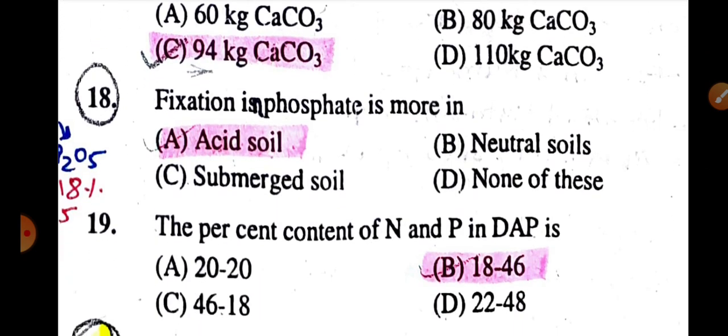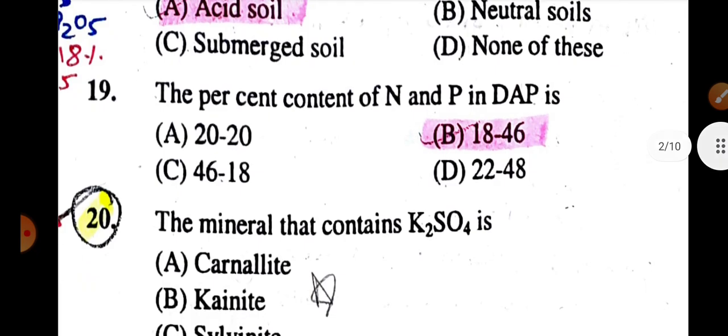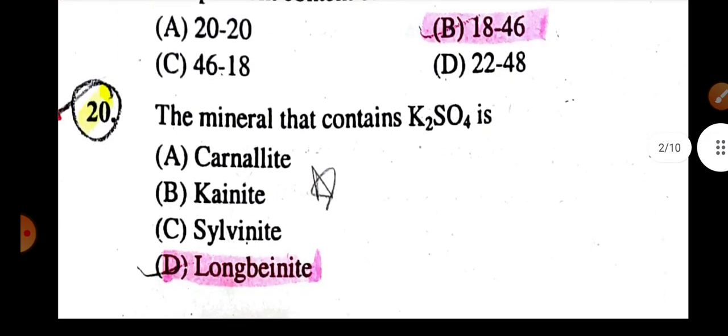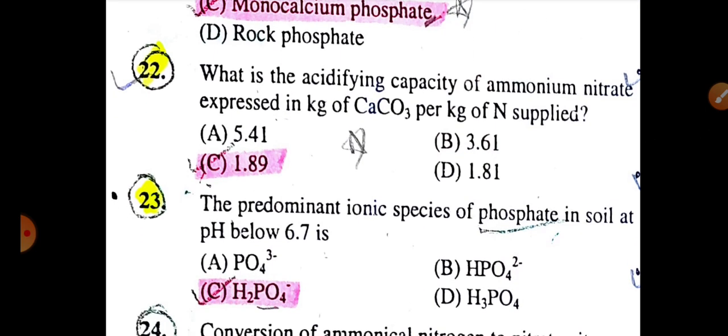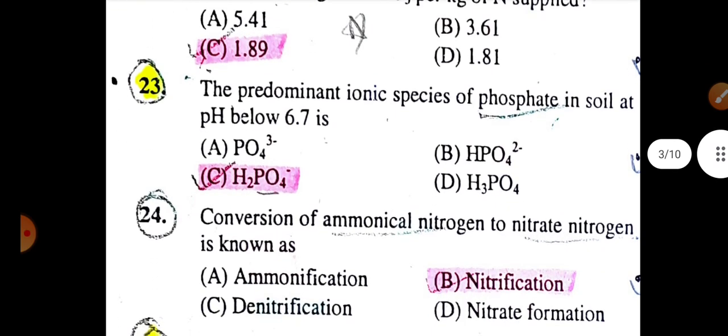Fixation of phosphate is more in acidic soils. The percentage content of nitrogen and phosphorus in DAP is 18-46%. The mineral that contains K2SO4 is langbeinite. The chief component of single superphosphate that supplies phosphorus to plant is monocalcium phosphate. The acidifying capacity of ammonium nitrate expressed in kg CaCO3 per kg of nitrogen supplied is 1.89. The predominant ionic species of phosphate in soil at pH below 6-7 is H2PO4-.